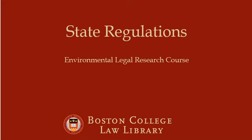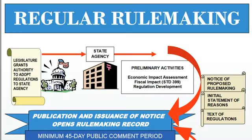This video is on state regulations for the Environmental Legal Research course. State and federal regulations are similar in a number of ways. States have their own version of the Administrative Procedures Act, which sets out how agencies can promulgate rules, and how members of the public can present data, views, or arguments on the proposed regulations.